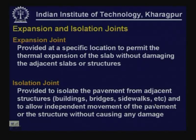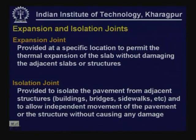We also have expansion and isolation joints — in general they are similar in their function. An expansion joint is provided at specific locations to permit thermal expansion of the slab without damaging the adjacent slabs or structures. Obviously when temperature increases from the temperature at which the concrete was placed, the concrete is going to expand. The concrete should be permitted to expand, otherwise there will be significant compressive stresses generated in the concrete slab. To avoid that, expansion joints are provided at specified spacing.